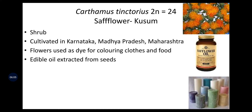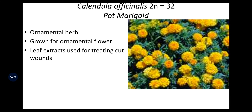Carthamus tinctorius has chromosome number 2n = 24, commonly known as safflower or kusum. It is a shrub with or without thorns, cultivated in Karnataka, Madhya Pradesh, and Maharashtra. Flowers are used as dry dye for coloring clothes, and edible oil is extracted from the seeds. Calendula officinalis, 2n = 32, is pot marigold, an ornamental herb grown for ornamental flowers; leaf extracts are used for treating cut wounds and honeybee bites.